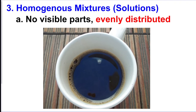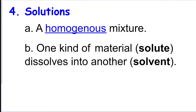Then you have a homogeneous mixture, which means you cannot see the different parts and they're evenly stirred up together. Like this coffee — if there's sugar in it you might not be able to see it, and it's stirred evenly. A homogeneous mixture can also be called a solution; that's just another name for it.